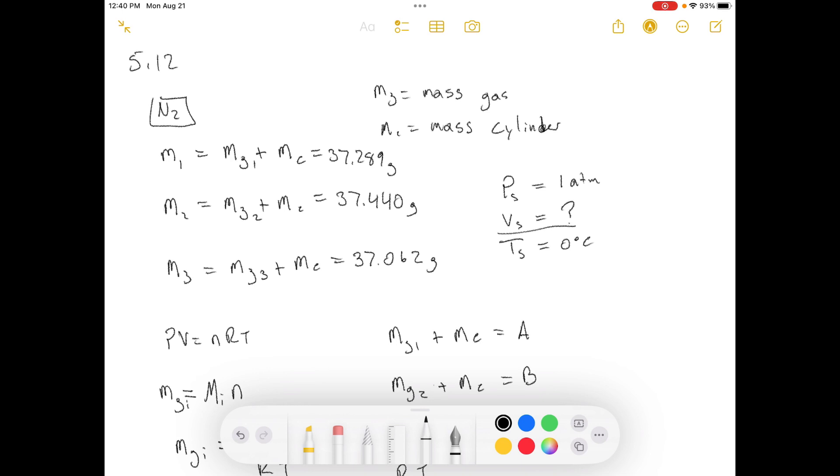Today we're working out of Elementary Principles of Chemical Processes, Third Edition, and we're doing problem number 5.12. It says: A gas cylinder filled with nitrogen at standard temperature and pressure has a mass of 37.289 grams. The same cylinder filled with carbon dioxide at STP has a mass of 37.440 grams. When filled with an unknown gas at STP, the container mass is 37.062 grams.